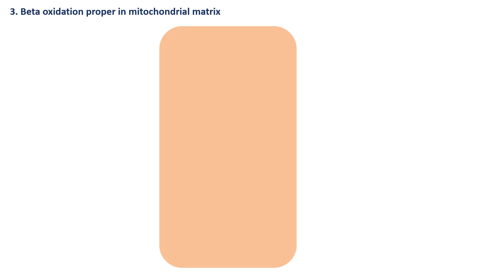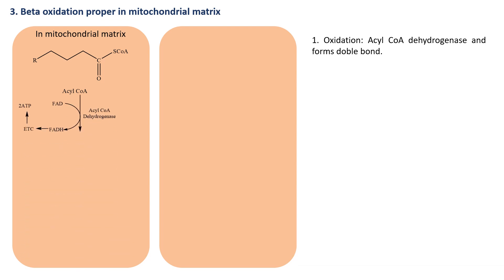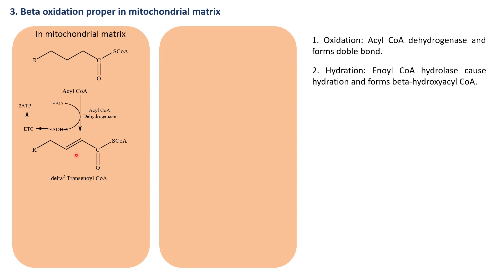The third stage is beta oxidation proper in the mitochondrial matrix. Inside the mitochondrial matrix, the acyl coenzyme A undergoes an oxidation reaction in the presence of the enzyme acyl coenzyme A dehydrogenase. Between the alpha and beta carbon atoms (CH2–CH2), a double bond is formed, producing an intermediate called delta-2-trans-enoyl coenzyme A.